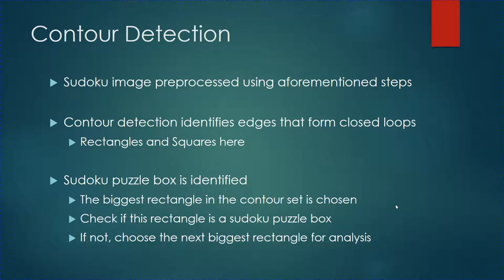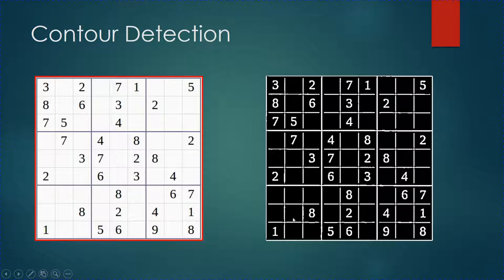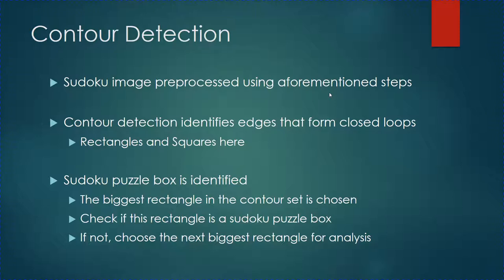The next step is contour reduction. Before applying it, the Sudoku input image is preprocessed using the same four steps: grayscale conversion, Gaussian blur, histogram equalization, and adaptive thresholding. The preprocessed Sudoku image looks like what is shown on the right-hand side. After preprocessing, the image is provided as input to a module which identifies contours in the frame — contours are edges in an image that form a closed loop, mostly squares and rectangles from the Sudoku puzzle.